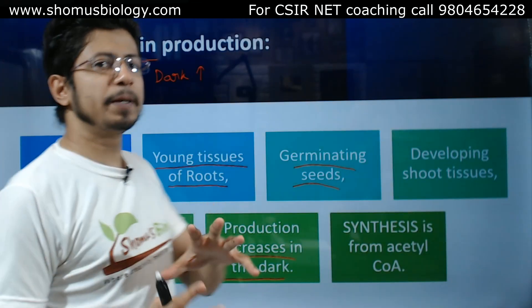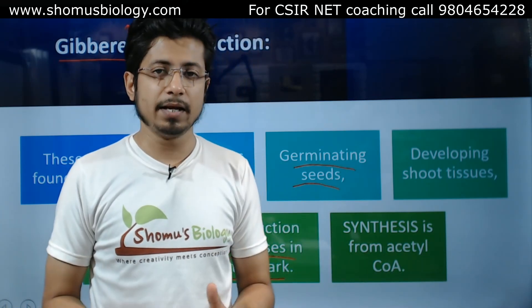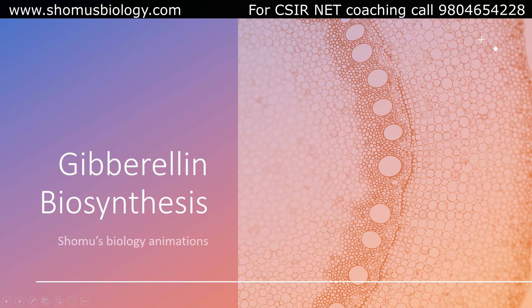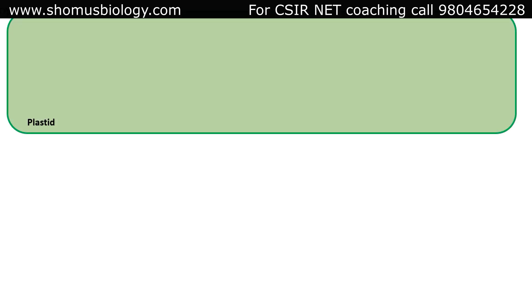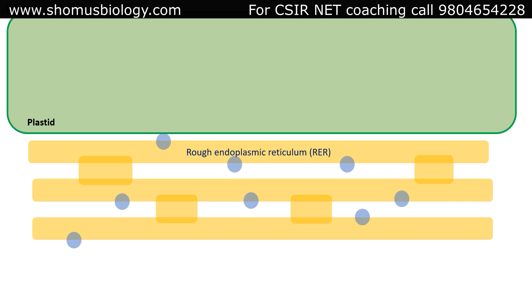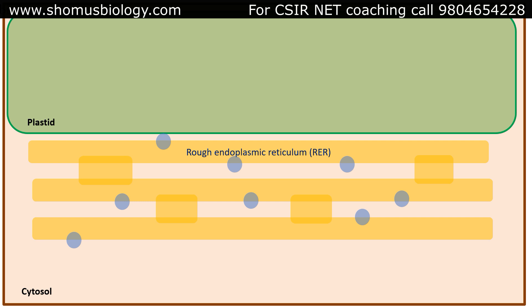Let's look at this animation explaining how exactly gibberellic acid is formed in a plant cell, particularly in these different locations. The gibberellin biosynthesis pathway involves different locations in the plant cell: the plastid, the endoplasmic reticulum — particularly the rough endoplasmic reticulum — and the cytoplasm. The process begins in the plastid, then moves to the rough endoplasmic reticulum, and then finishes in the cytoplasm.